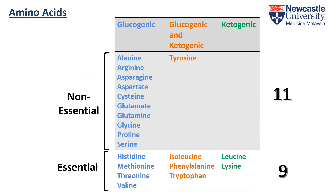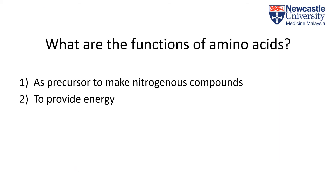These are the essential and non-essential amino acids, and it's easy to remember using 9-11, or September 11. We need 9 amino acids from our diet because they are essential, while we can synthesize 11 non-essential amino acids. The two functions of amino acids are: number one, to act as precursors to make nitrogenous compounds; and number two, to provide energy in times of need, especially during starvation.